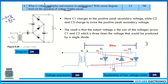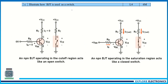With circuit diagram, brief out the operation of a voltage tripler circuit. Diodes D1, D2, D3 and capacitors C1, C2, C3 are placed in the circuit. Applying Kirchhoff's voltage law through three loops — each loop once — gives a voltage of 3Vm across C1 to C3. Explain this in detail for the voltage tripler circuit.